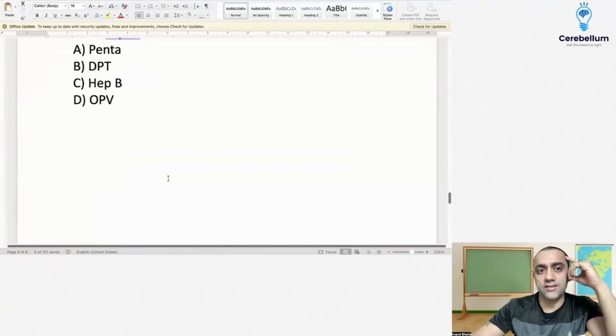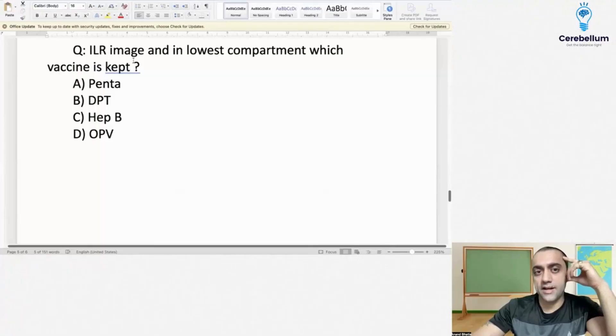Last question: ILR - ice-lined refrigerator - image was there, and in the lowest compartment which vaccine is kept? So lowest, we all know we kept, we put the OPV.